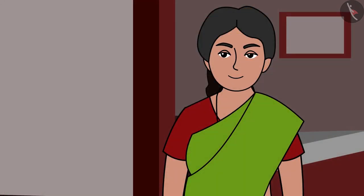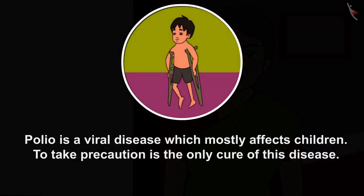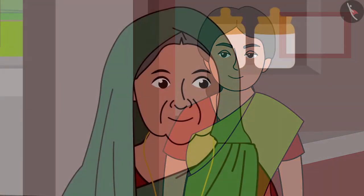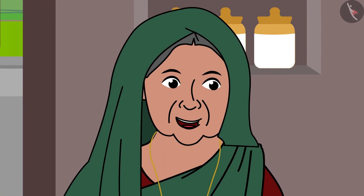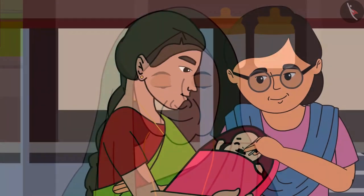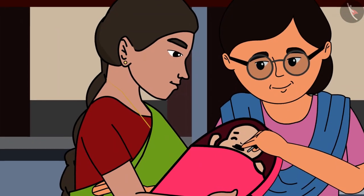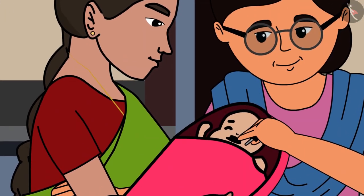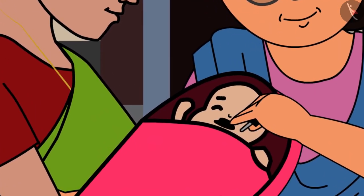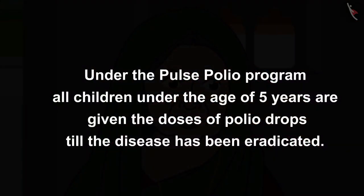Yes, mummy. Polio is not a hereditary disease. You unfortunately had polio because your parents might not have vaccinated you or there was not much awareness then. Polio is a viral disease which mostly affects children. To take precaution is the only cure of this disease. To increase immunity against the polio virus, a systematic and timely vaccination drive is on. Polio drops and vaccinations are given to all children below the age of 5 years.